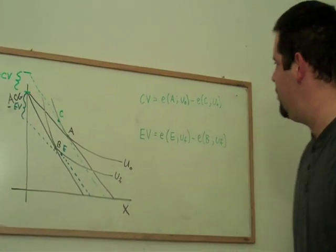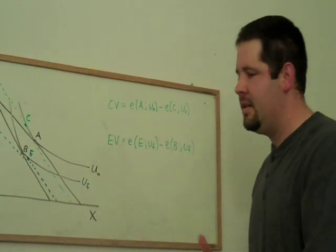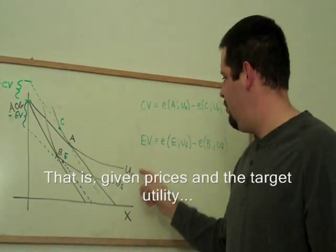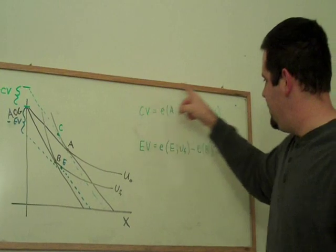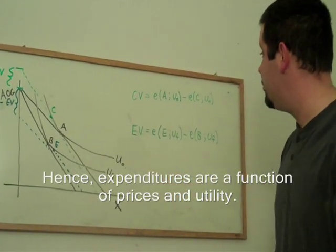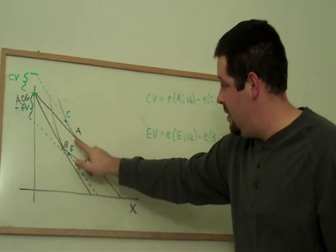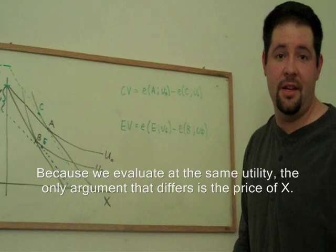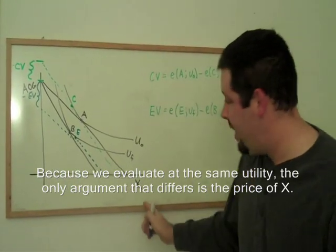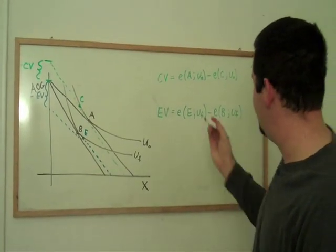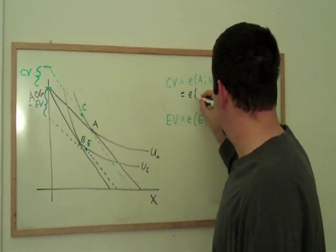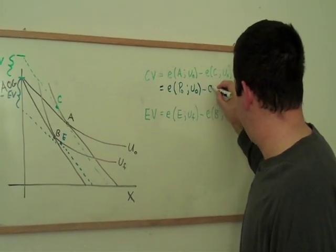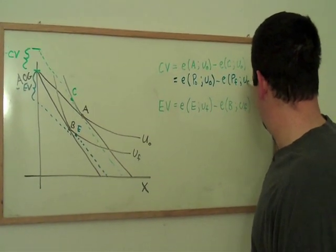I also made some reference to how this relates to the expenditure function. Now, if you've studied the expenditure function, you remember that we ask ourselves how much does it cost at a minimum to reach a target level of utility. So compensating variation, if we think about it in terms of the expenditure function, would just be the difference in how much bundle A costs compared to bundle C, which is useful because they're on the same indifference curve. So we can write the expenditure function representation here. Now the only arguments that differ are the price of X. The price of all other goods remains constant throughout this.